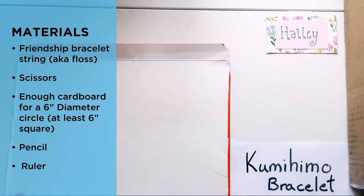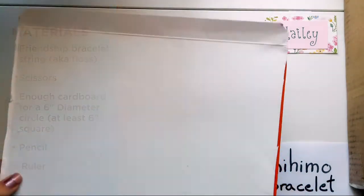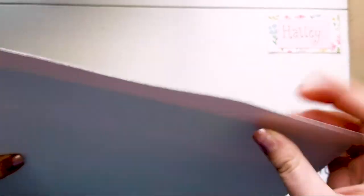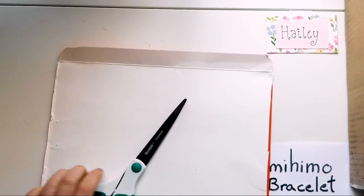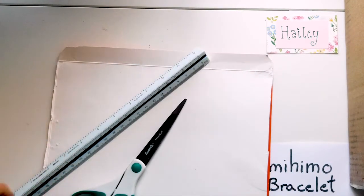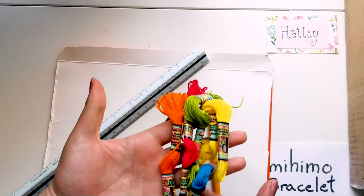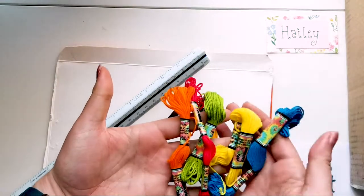So to start out, what we're going to need for this project is some cardboard. This was like a mailing envelope, so I glued two pieces together to make it a little bit sturdier. I'm going to need scissors, a ruler, and a pencil to help draw out the circle, and then some friendship bracelet string, or it's also called floss.